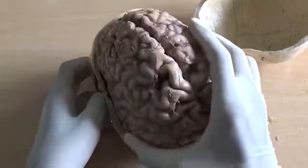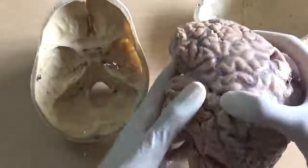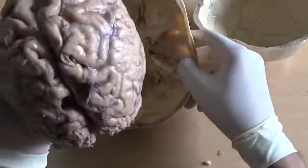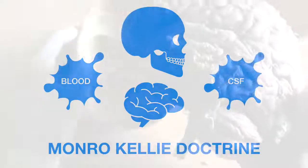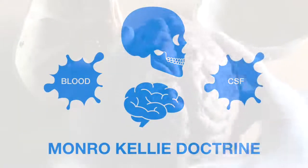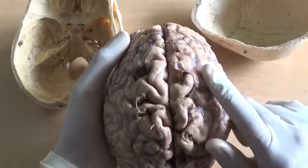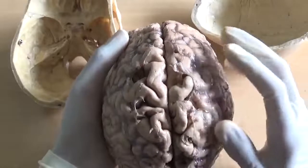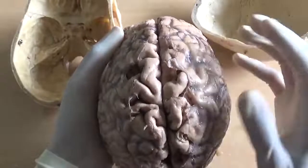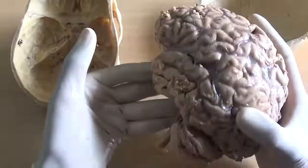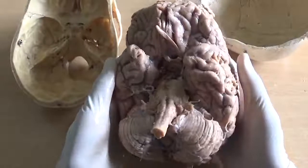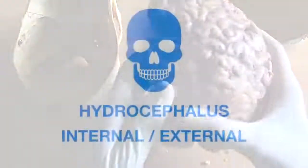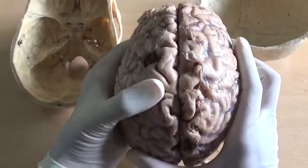We have removed the dura mater, and this is to show you how the brain lies deep inside. There is hardly any space left once we put it inside. According to the Monroe-Kellie doctrine, the three tissues lying within the brain box are brain, blood, and CSF. There is hardly any dead space for any of the three to expand — so if one expands, the remaining two will have to compress. The compressible tissue is the brain. So if there is an accumulation of blood, the brain tissue will get compressed; or if there is excessive CSF inside, the brain tissue again has to compress. That is the Monroe-Kellie doctrine.